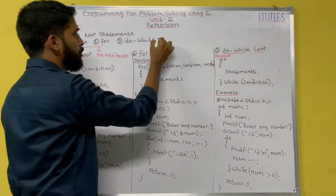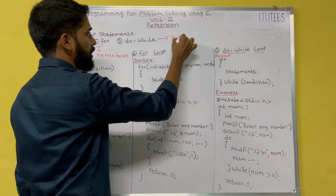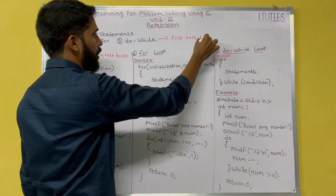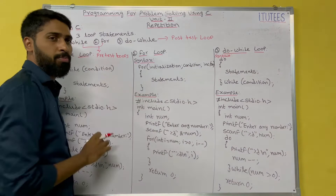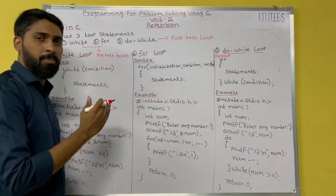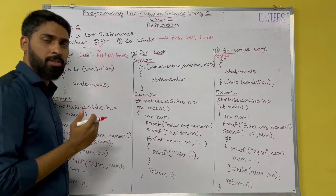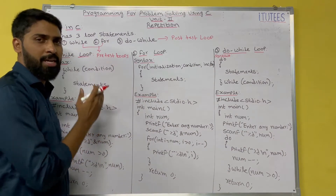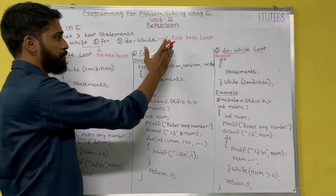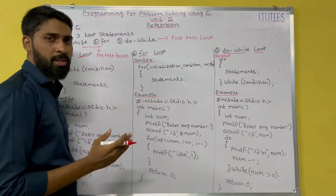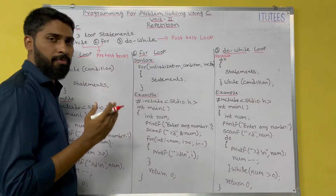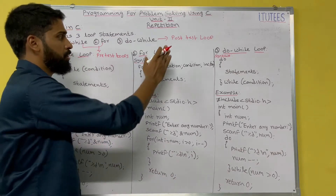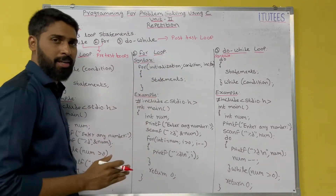Do-while is a post-test loop. A pretest loop checks the condition before executing the statements. A post-test loop first executes the statements, then checks the test condition.